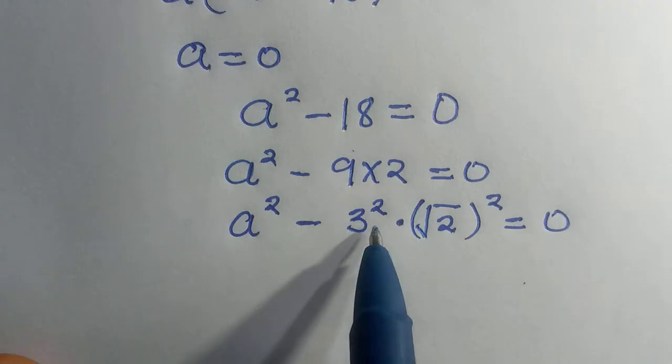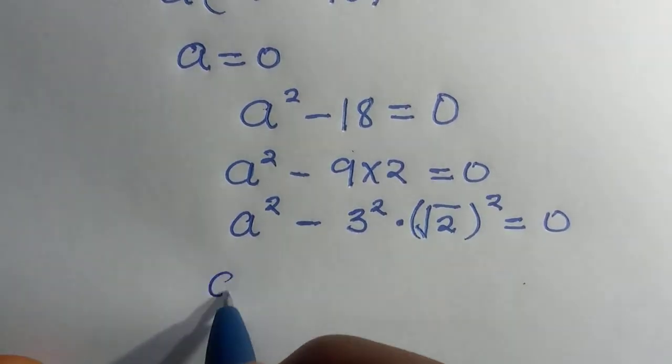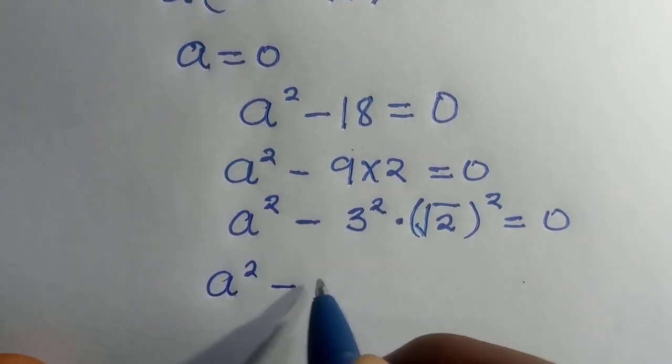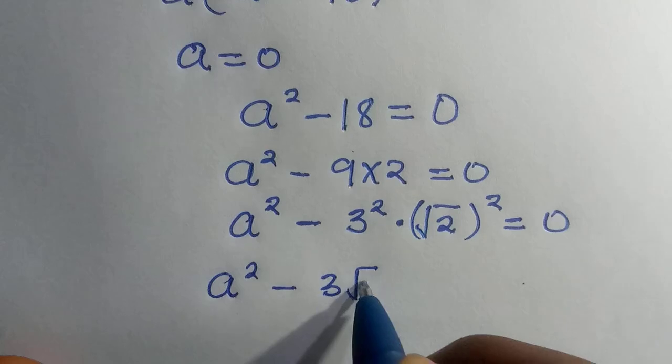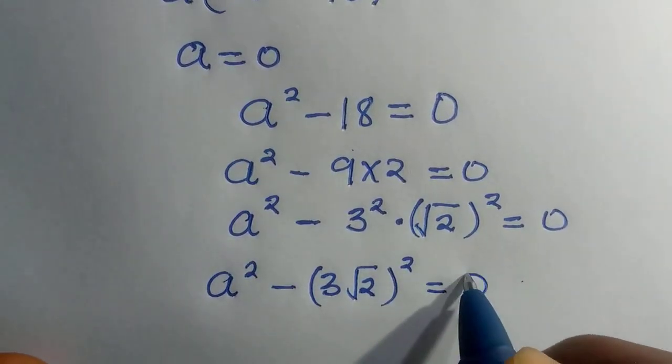So here is having square, it's having square, we can combine this together, and we have a squared minus 3 root 2, all squared equals 0.